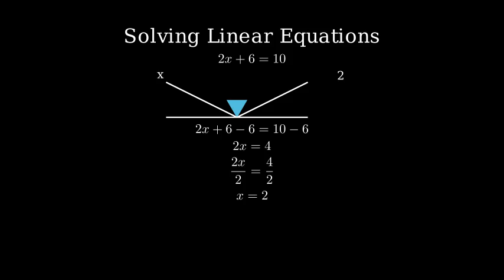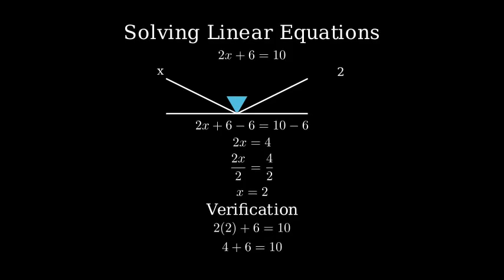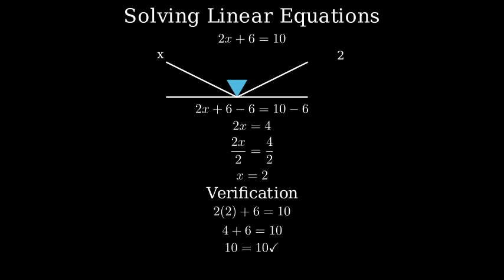Let's verify our answer by plugging 2 back into the original equation. If we put 2 in for x in 2x plus 6 equals 10, we get 2 times 2 plus 6 equals 10, which is 4 plus 6 equals 10, and finally 10 equals 10. This shows our solution is correct.